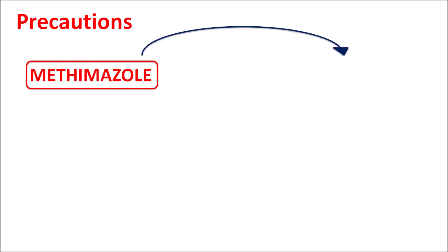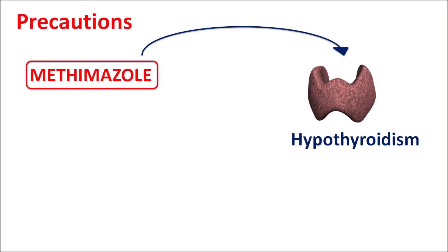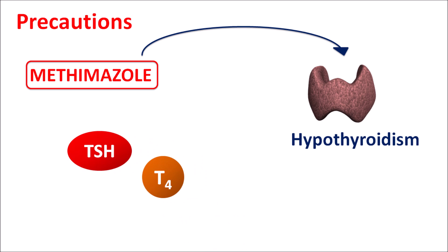Since this drug acts as an anti-thyroid agent, with high doses and long-term use it can produce the opposite effect — methimazole may cause hypothyroidism. Therefore, levels of T4 as well as TSH should be thoroughly checked during long-term use. When TSH levels are elevated along with a reduction in T4 levels, this indicates hypothyroidism. In severe cases, use of this drug should be stopped and thyroid supplement given if required.